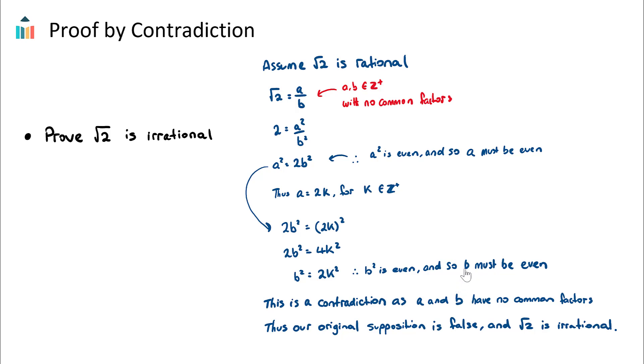So we have proven that this is a contradiction—that a and b have no common factors. So what we can say is thus our original supposition is false, this is our original assumption, and what we can therefore conclude is that √2 is in fact irrational.